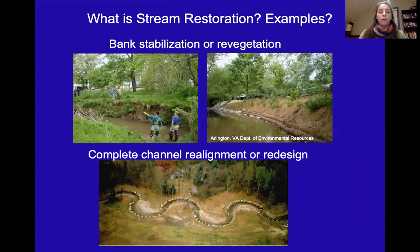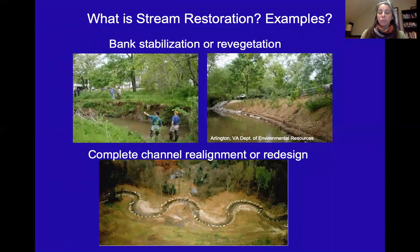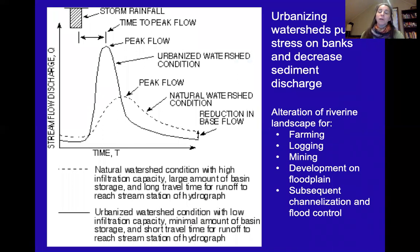Some examples of stream restoration include bank stabilization, where we might reformat and revegetate the stream, or we might design a completely new channel pattern that's more sustainable and redirect the river through this new channel alignment.